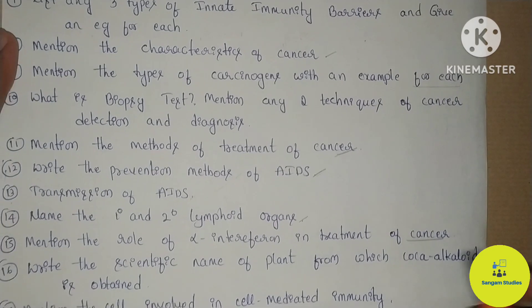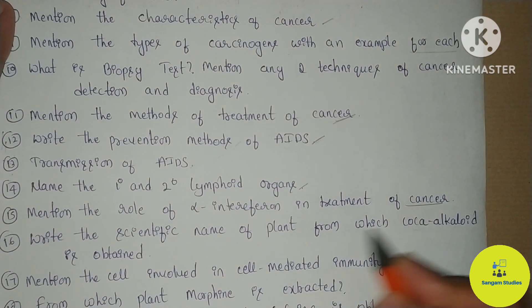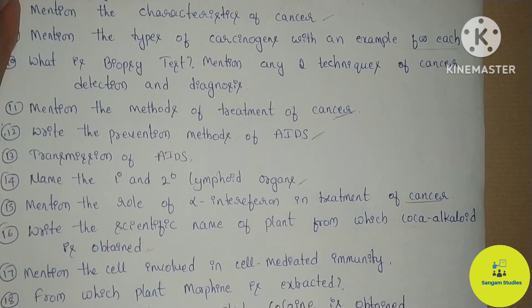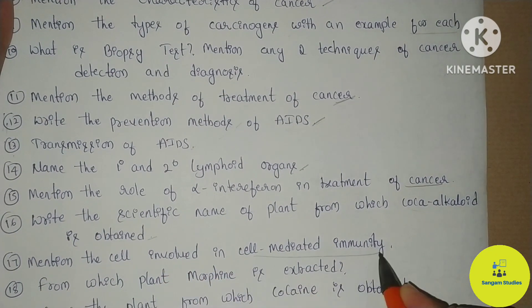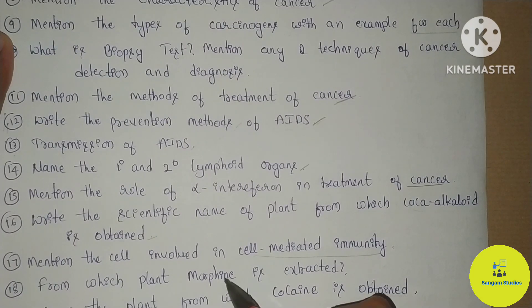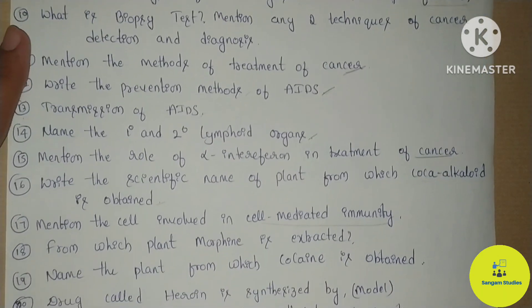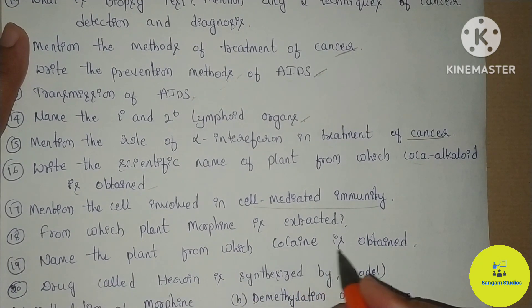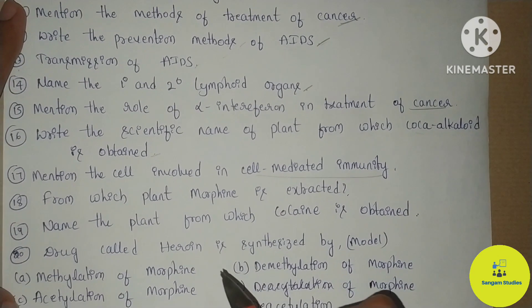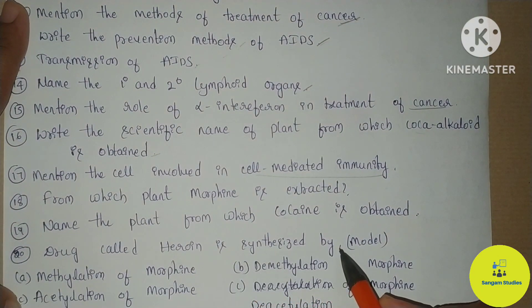Role of alpha interferon in the treatment of cancer — also MCQ and fill in the blanks. Write the scientific name of the plant from which cocaine alkaloid is obtained — MCQ and fill in the blanks. Mention the cell involved in cell-mediated immunity. From which plant is morphine extracted? Each one: from which plant is cocaine obtained — MCQ and fill in the blanks. The drug heroin is synthesized by — Model Question Paper MCQ.